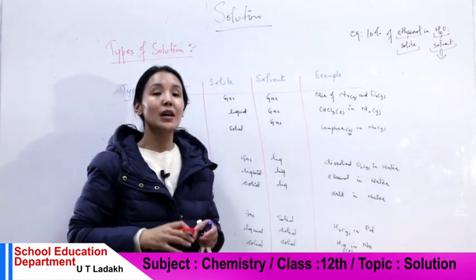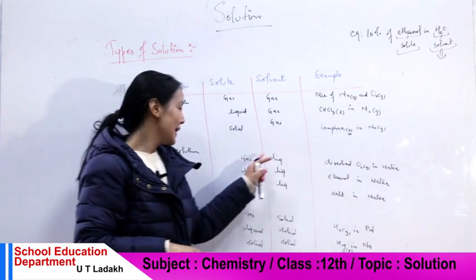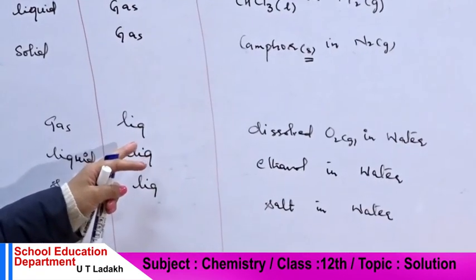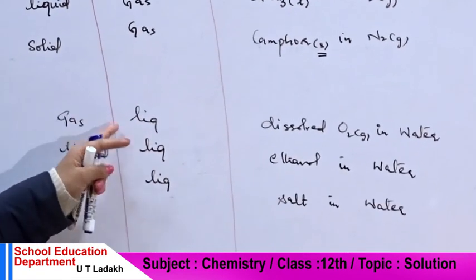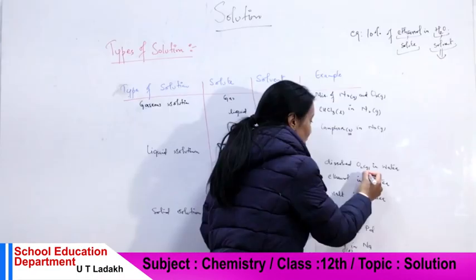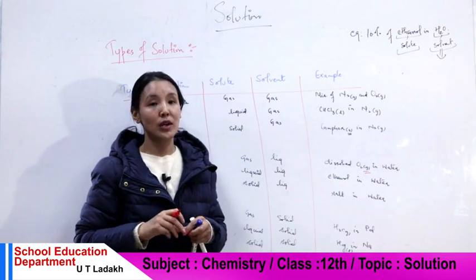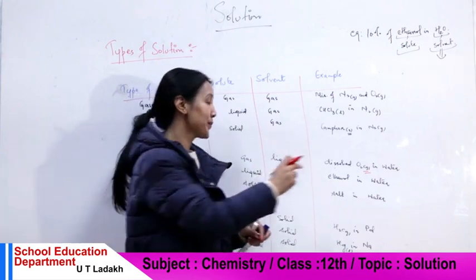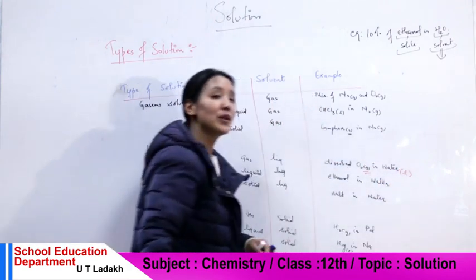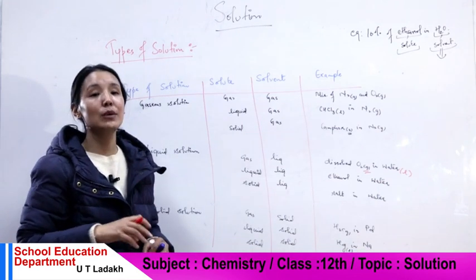Dissolved oxygen in water is an example of a gas in liquid solution. Aquatic life survives because of dissolved oxygen — the oxygen exists in a gaseous state dissolved into the liquid water.